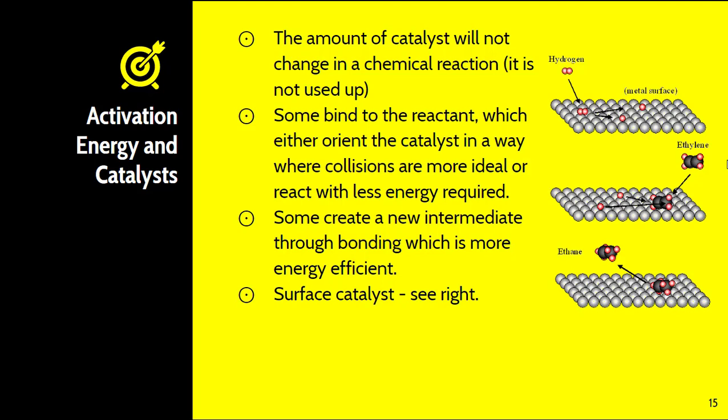Some catalysts work as surface catalysts. For example, hydrogen attaches to the catalyst, which helps break bonds apart. Metals are often used as catalysts in chemical reactions. Ethylene then reacts with the hydrogen present on the catalyst, forming a single molecule of ethane. Catalysts can work in a variety of ways, so it's important to understand what each particular catalyst is doing.